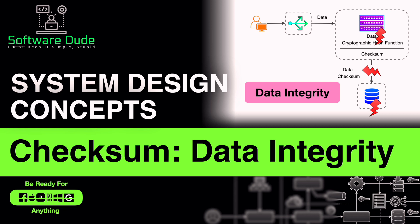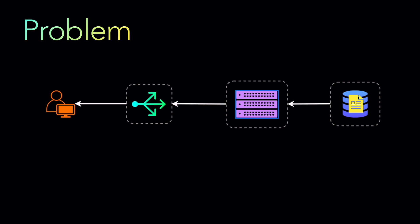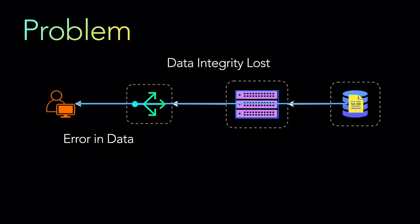Let's look at what the problem is. We have a basic three-tier service where a user is calling the load balancer, the load balancer is calling the service, and the service is getting and writing data to the database. When a request comes from the user and the user writes data to the database, if there is any kind of fault or jitter — in the database, network, or service layer — it can result in the data being corrupted. If the data is corrupted, when the user tries to read, it gets wrong data. We lost data integrity: what was written is not the same as what the user gets back.